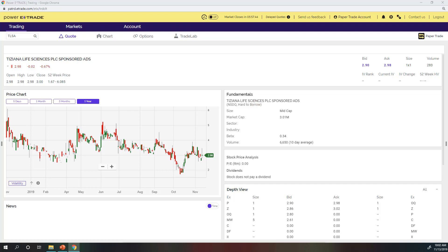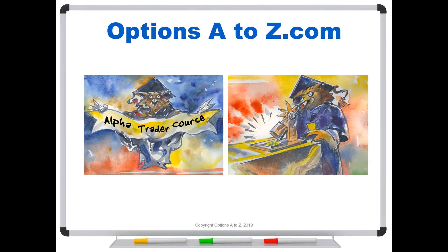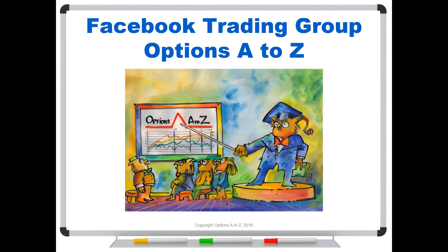I hope that helps you understand what the short interest ratio is. For any stocks you might be trading, whether bullish or bearish, you might want to track that ratio. For those who'd like to learn more about options trading, please check out the AlphaTrader course and strategy lab at OptionsAtoZ.com. Also, please join us on the Facebook trading group Options AtoZ — you can find a link in the description below.